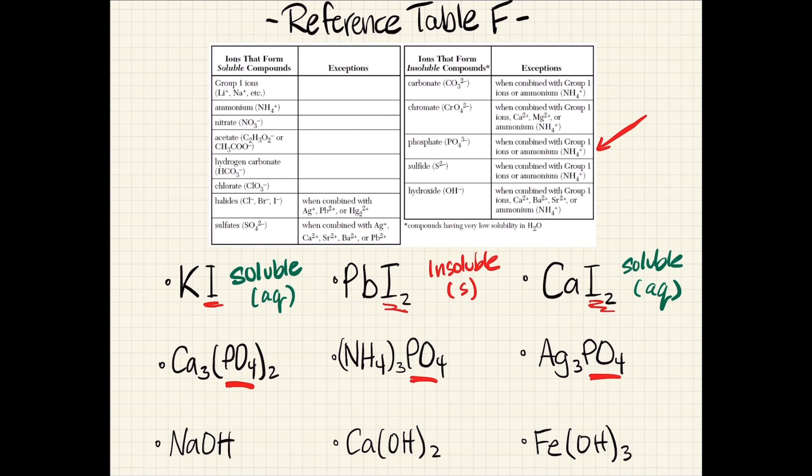Now let's look at our phosphates. We can see our three examples of phosphates. All phosphates are insoluble. The first one is going to be calcium phosphate. Calcium phosphate is going to be insoluble because calcium is neither a group 1 ion nor ammonium.